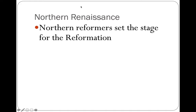As we talk about the Northern Renaissance, I want you to think about it in the context of the Protestant Reformation. We haven't talked about the Protestant Reformation yet — that's in our next chapter. But the Northern Renaissance has a lot to do with why the Protestant Reformation goes down. It's going to be a key cause for Martin Luther and his 95 Theses.